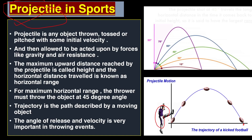When the footballer kicks the ball into the air with an initial force, two forces act on the ball: gravitational force and air resistance. That object in the air is called a projectile. Projectile is any object thrown, tossed, or pitched with some initial velocity into the air, upon which gravity and air resistance act.